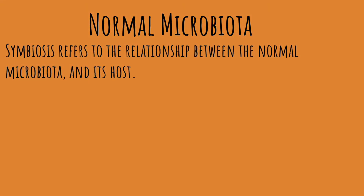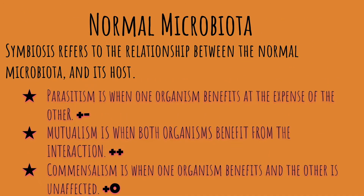Symbiosis is the relationship between normal microbiota and its host, and there are three types of symbiotic relationships. Parasitism is when one organism benefits at the expense of the other. An example is when a mosquito bites a human to get blood, but the human suffers with itching, blood loss, and in some cases disease — making this a positive-negative relationship.